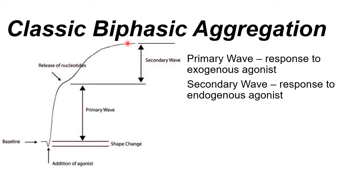There is an event called classic biphasic aggregation. In this phenomenon, we have two waves. The first wave is the primary wave, where aggregation is due to the exogenous reagent added. The second wave shows a slight flattening and then rises again — this secondary wave is due to endogenous agonists already present in the specimen. This can occur especially when the reagents used are collagen or ADP.